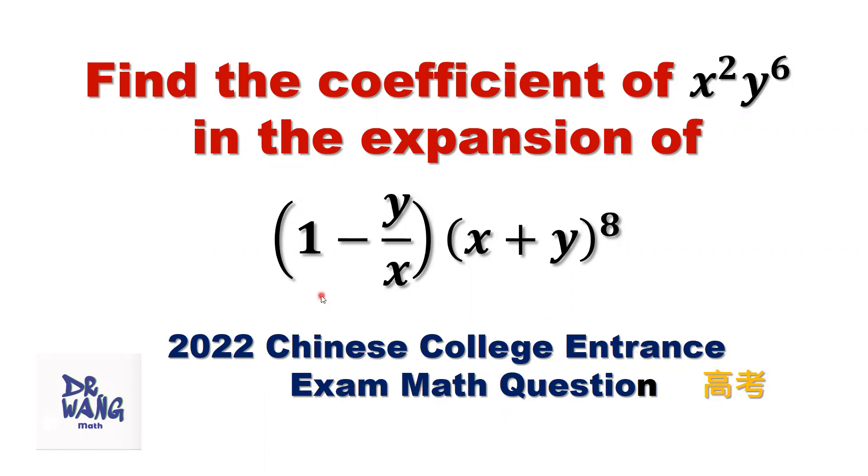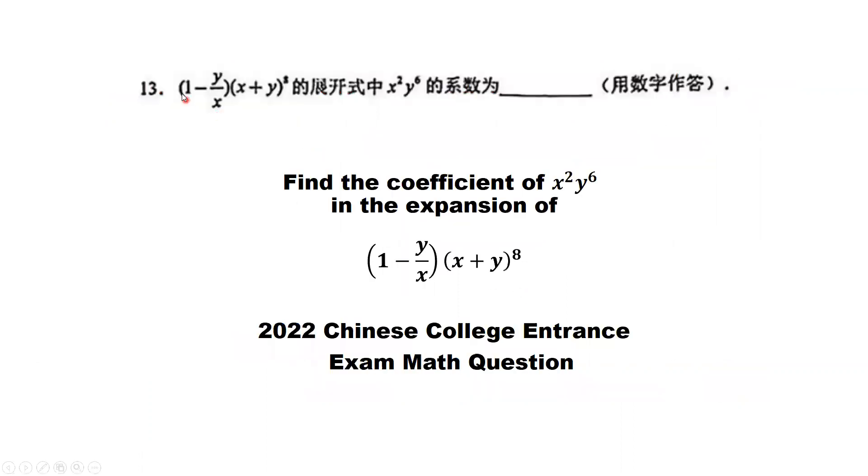The question is: find the coefficient of the term x²y⁶ in the expansion of (1 - y/x)(x + y)⁸. Here is the original question in Chinese.